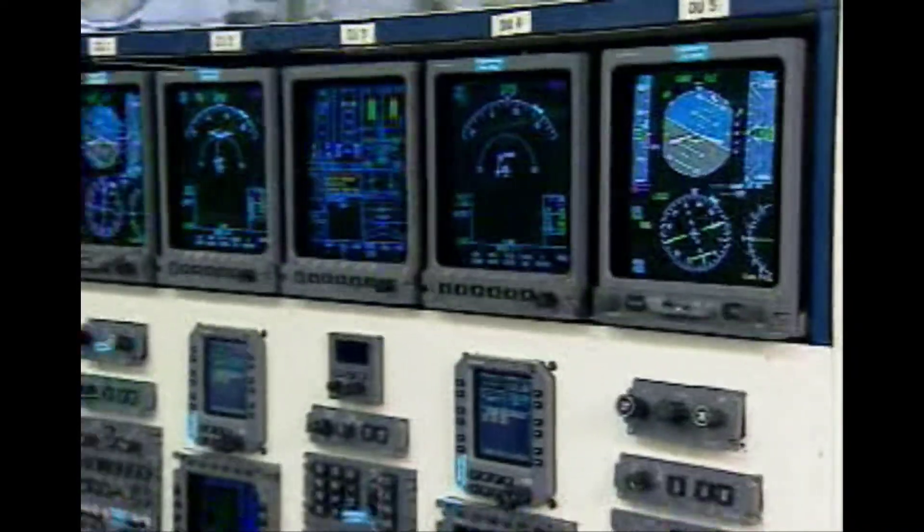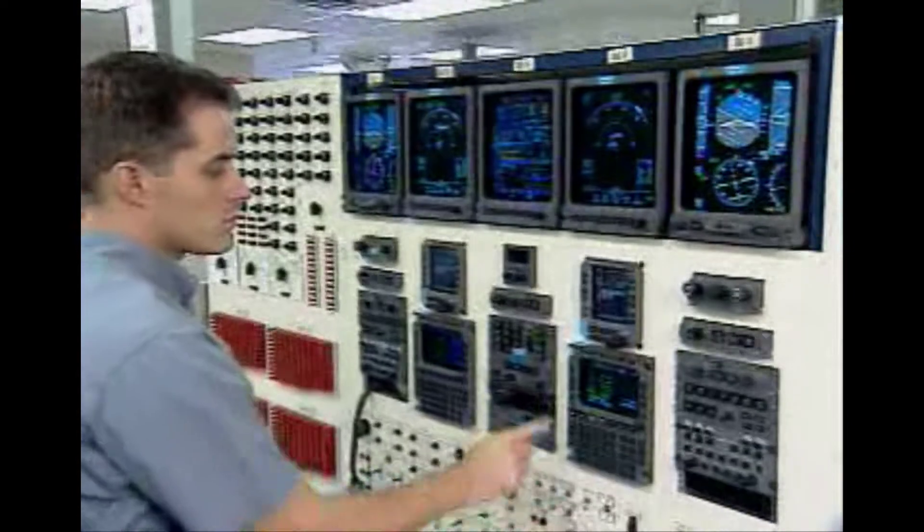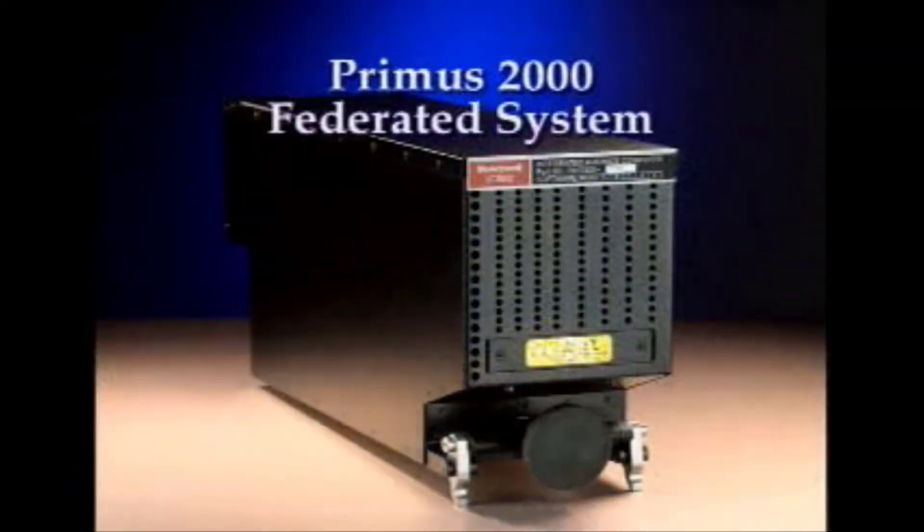The new Honeywell Primus EPIC system differs markedly from its predecessor, the Primus 2000. Based on a federated system where all functional software is unique to its associated hardware, the Primus 2000 is heavier and requires more space.